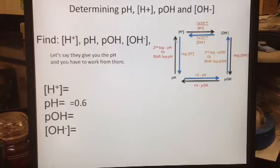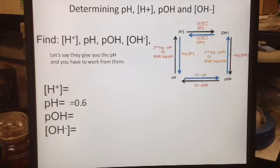To figure out these other things, you'll either have to follow arrows up to get to H+, or across to get to the pOH. To get to the OH-, which is the hydroxide ion concentration, that's going to be a two-step problem. So let's get started.